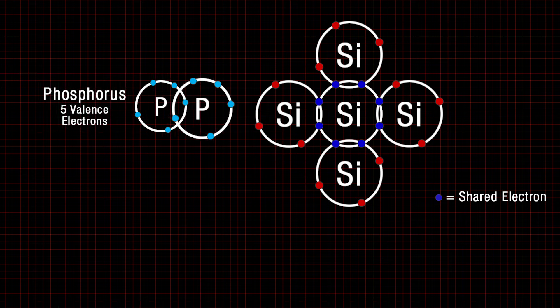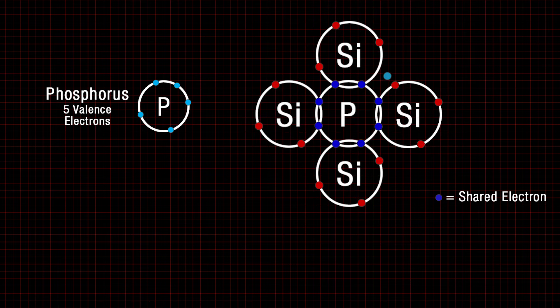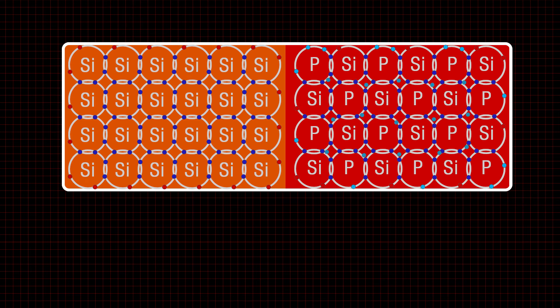Because the silicon atoms only need eight total, and phosphorus has a total of five valence electrons, each phosphorus atom provides one extra electron that is free to move about, causing the material to be negatively charged.